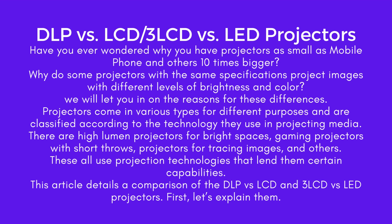Have you ever wondered why some projectors are as small as a mobile phone while others are ten times bigger? Why do some projectors with the same specifications project images with different levels of brightness and color? We will let you in on the reasons for these differences. Projectors come in various types for different purposes and are classified according to the technology they use in projecting media. There are high-lumen projectors for bright spaces, gaming projectors, short throw projectors for tracing images, and others — all using projection technologies that lend them certain capabilities.